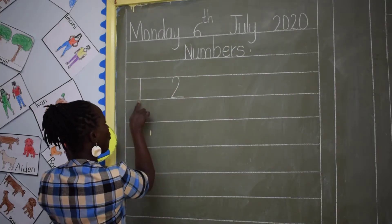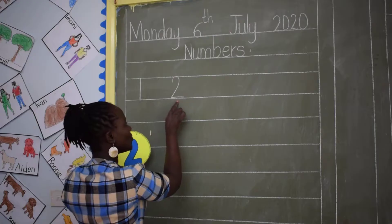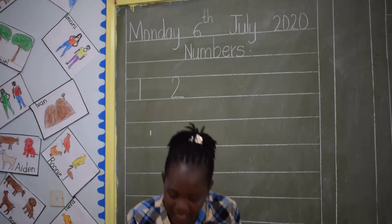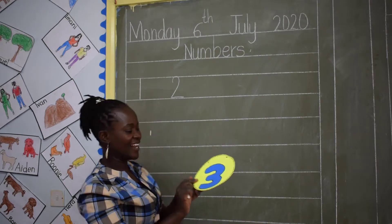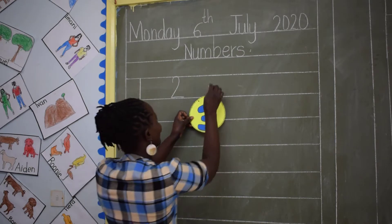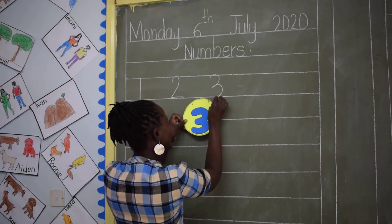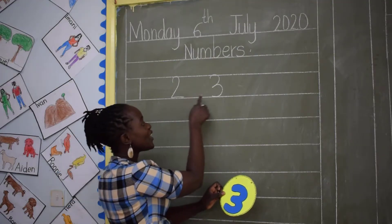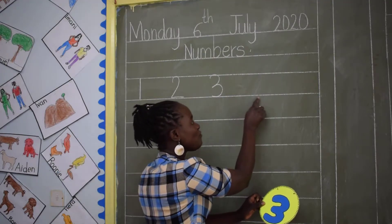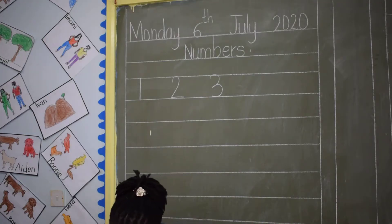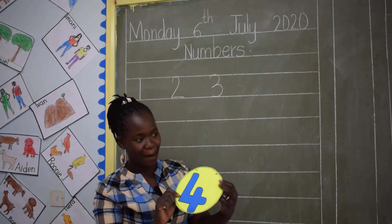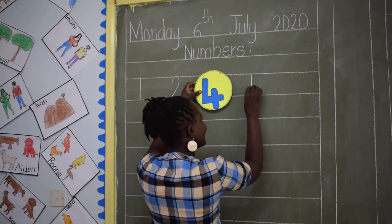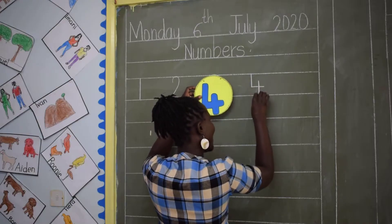Can we count? 1, 2. And after 2 we go to 3. Let's count: 1, 2, 3. And 4. Let me look for number 4. Here is number 4. Now, can we write number 4.